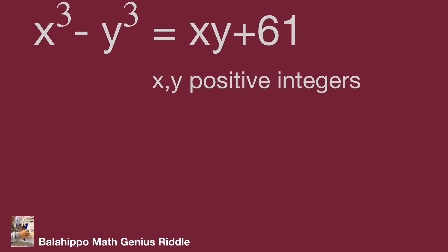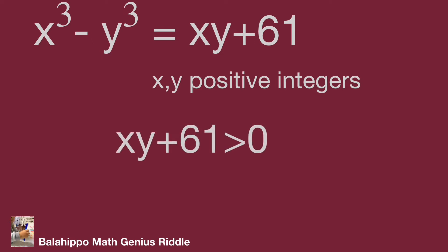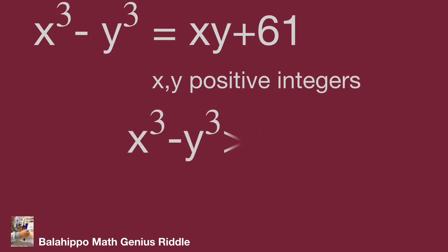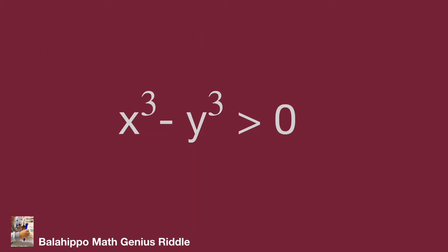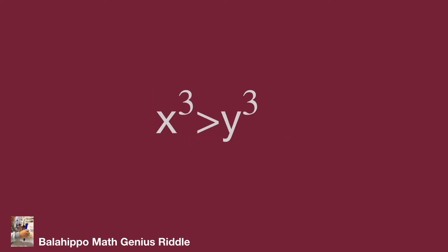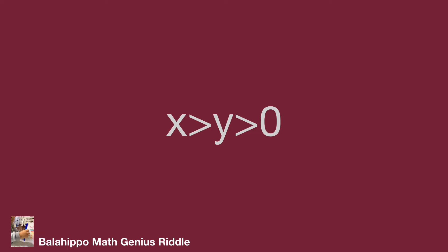Let's look at the right side of the equation. x times y is larger than 0. Therefore, x times y plus 61 is larger than 0. Then we can say x cubed minus y cubed is larger than 0. So x cubed is larger than y cubed. This gives us the new information: x is larger than y, and y is larger than 0.